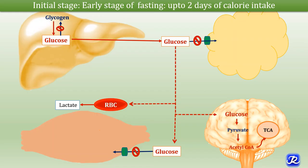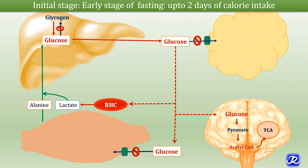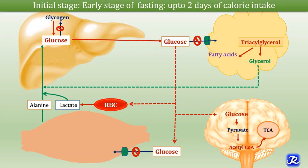As liver glycogen stores begin to deplete, gluconeogenesis begins. Initially, gluconeogenesis uses lactate formed by anaerobic glycolysis in RBCs and alanine coming from muscle via the Cori's cycle and glucose-alanine cycle. However, there is no net synthesis of glucose from lactate and alanine as precursors — it simply replaces glucose already converted to lactate and alanine. For net glucose synthesis, additional carbon comes from glycerol produced by triacylglycerol breakdown. Since only a limited amount is available, the main source of carbon for gluconeogenesis is the carbon skeleton of alanine and glutamine derived from breakdown of muscle proteins.